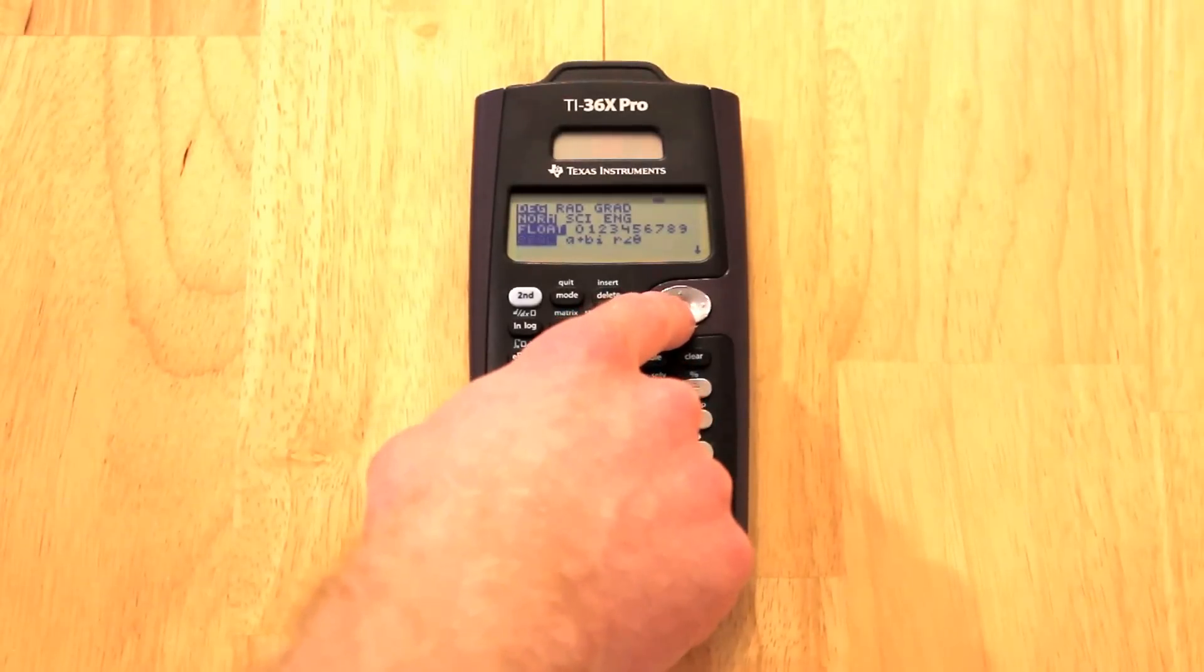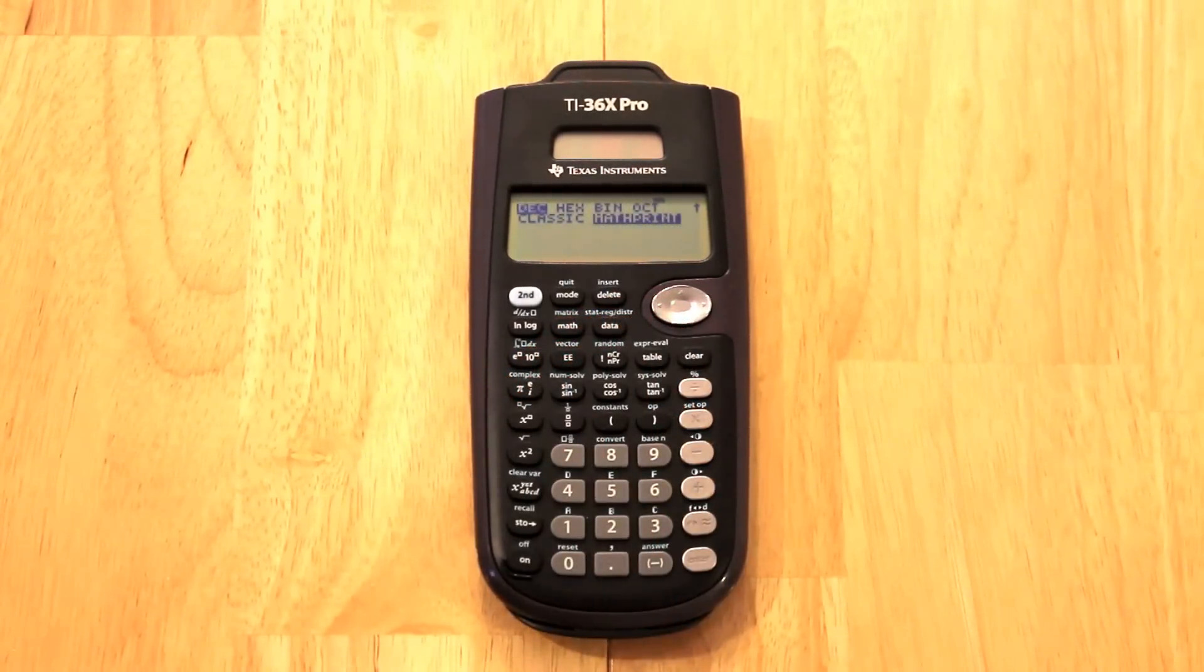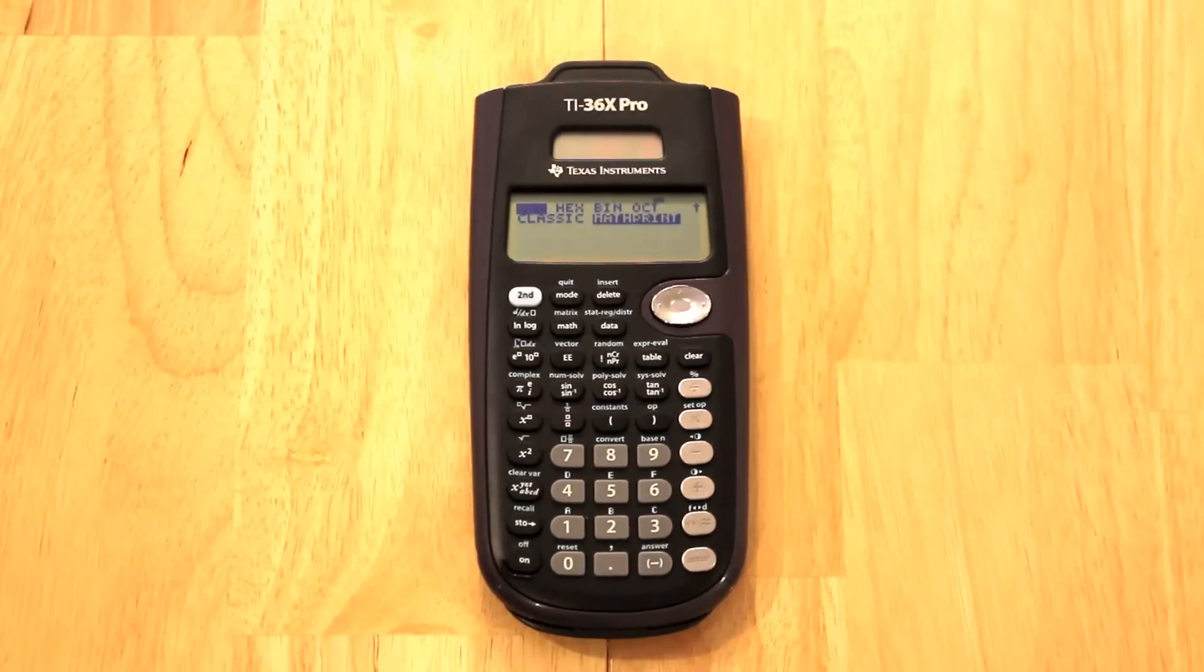And we'll scroll down through here and look and show you all your options. What your base is, whether you want decimal, hexadecimal, binary, or octal. And also if you want the classic view or the math print view.